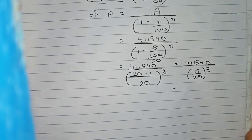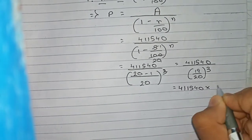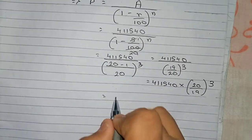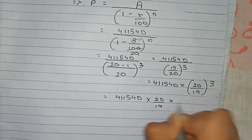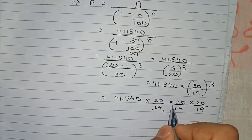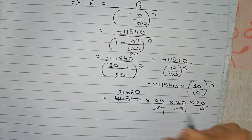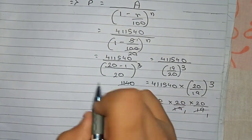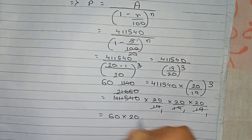Since 19/20 is in the denominator, we take its reciprocal, so it becomes 411540 multiplied by (20/19)^3. Writing this out: 411540 × (20/19) × (20/19) × (20/19). Now 19 and 411540 can be cancelled step by step — first giving 21660, then 1140, and finally 60.